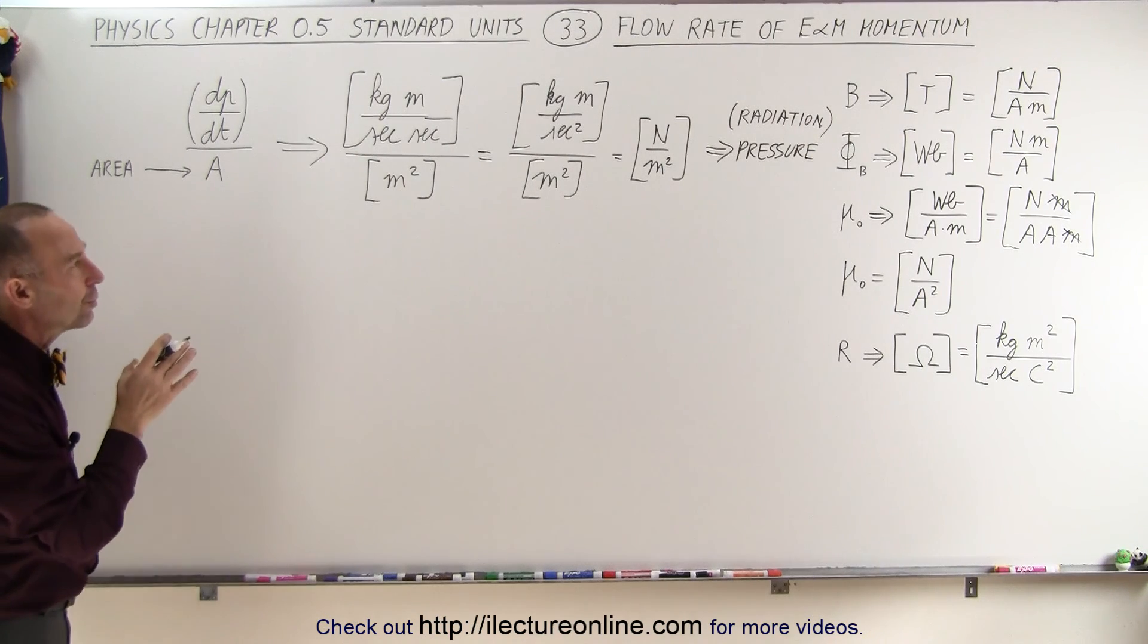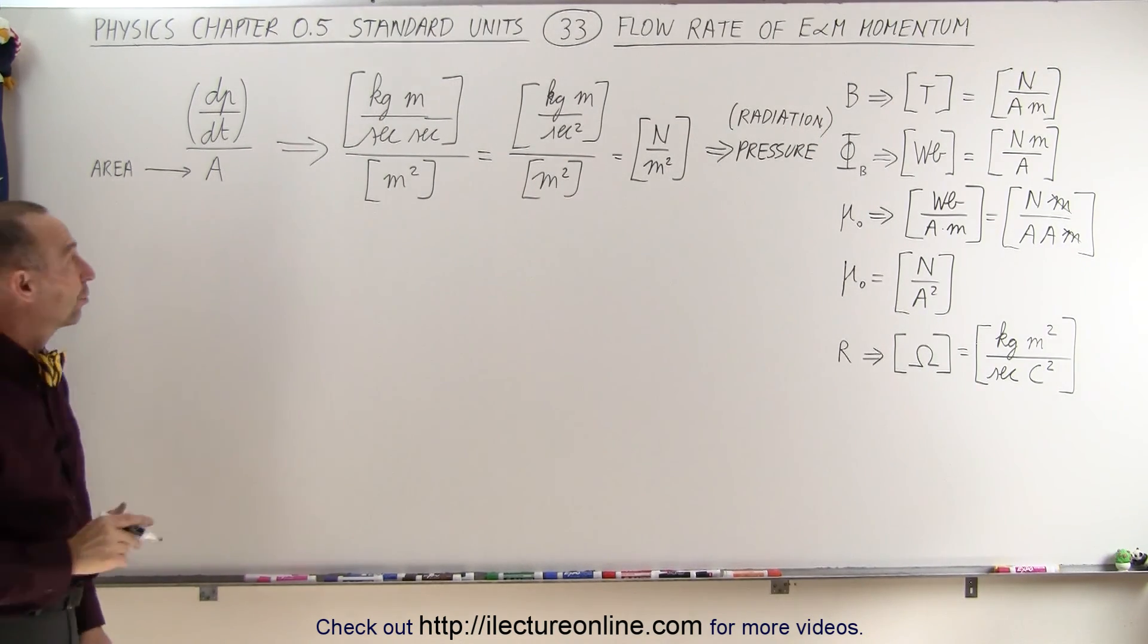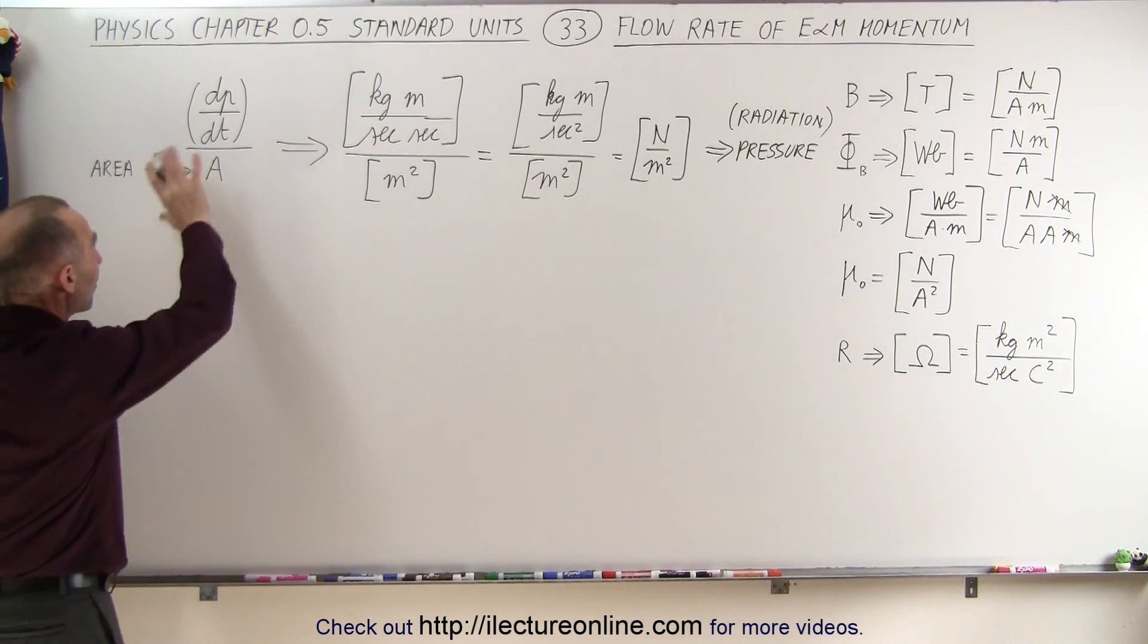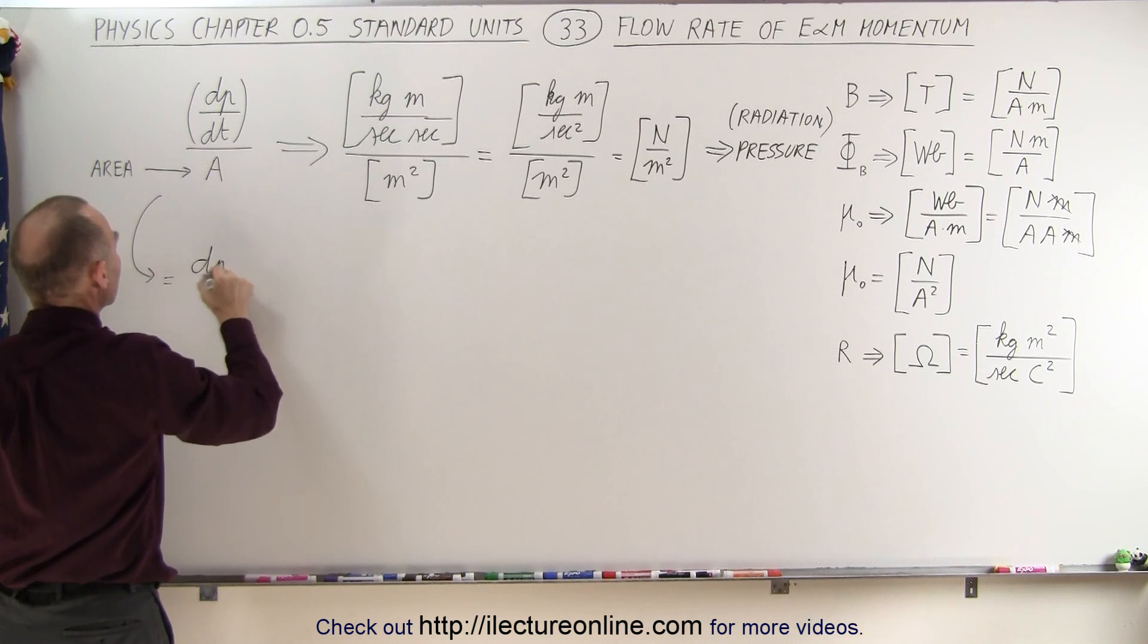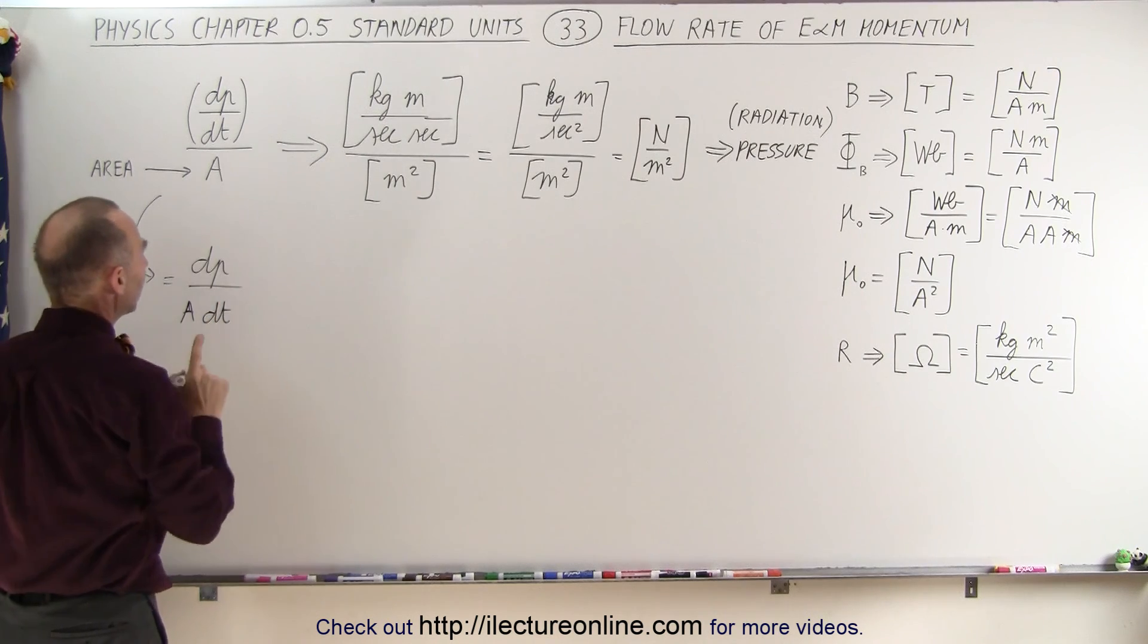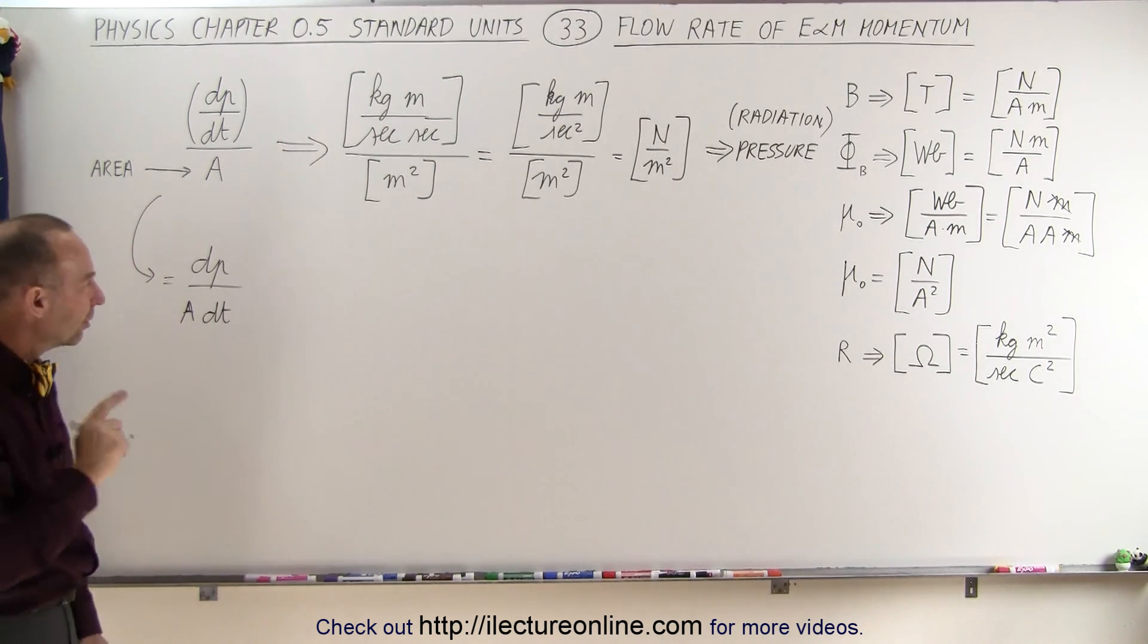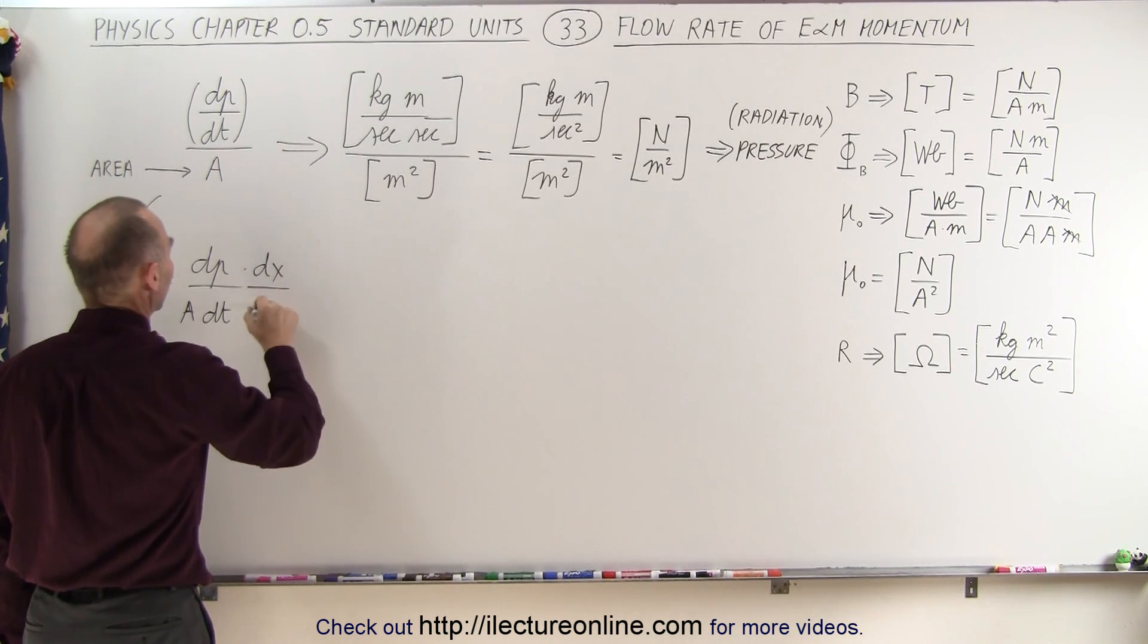Now what we're going to do is show you how we can come up with the equation for that using units. We're going to write this as dp divided by A times dt. So put an A there times dt. And now we're going to multiply the numerator and denominator by dx—times dx divided by dx.